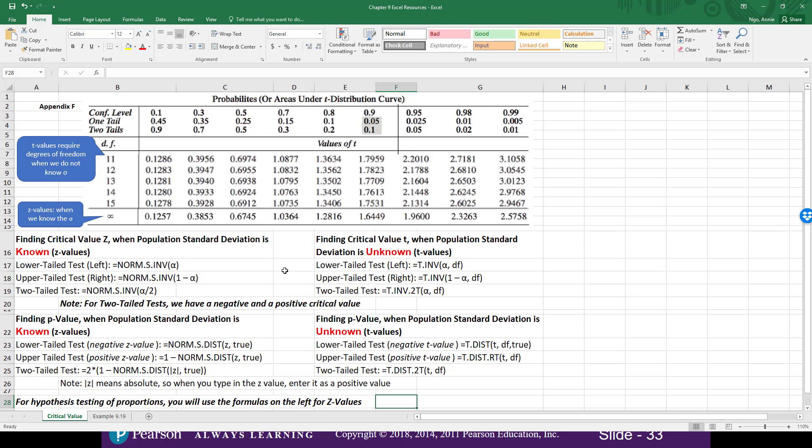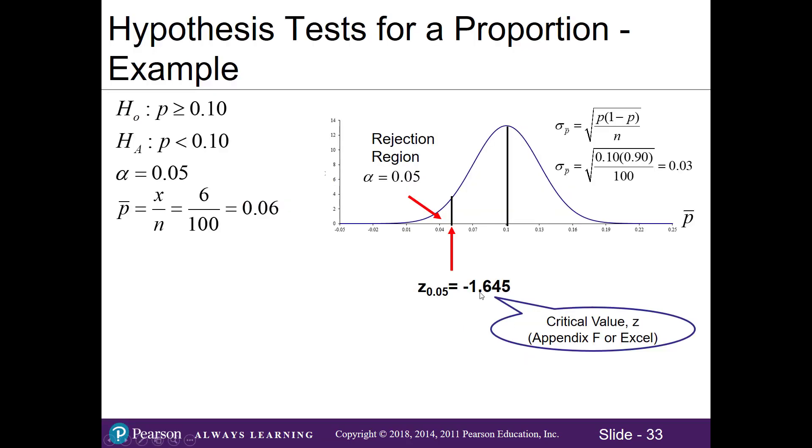Closing out, hit enter, we get negative 1.6449. Excel will help identify the positive and negative, but note that with the appendix F, you have to know to add the negative in there when we're in a lower tail test. So that's how we get our negative 1.645 for our critical value. Now how do we get our test statistic though?